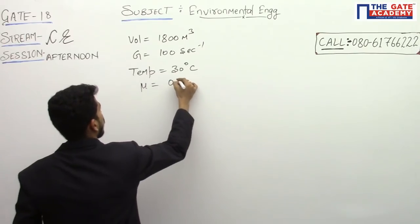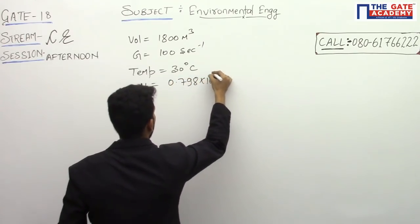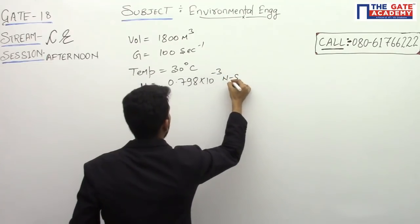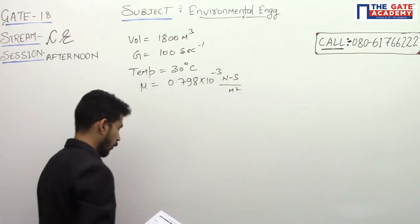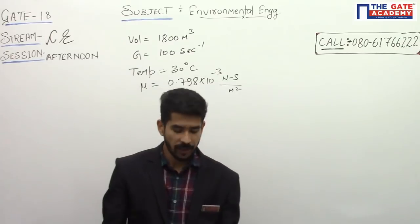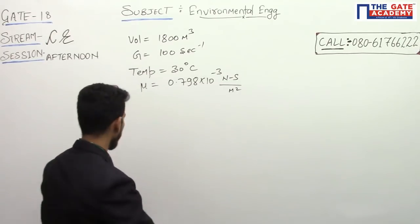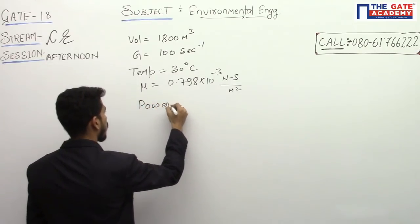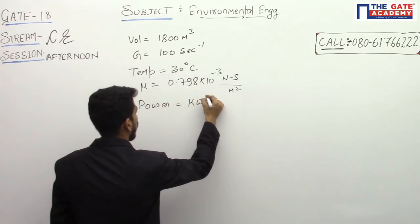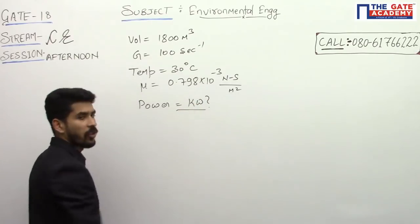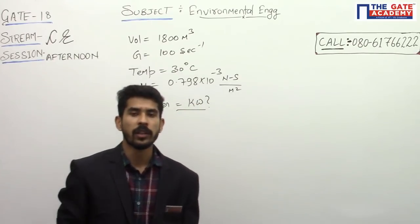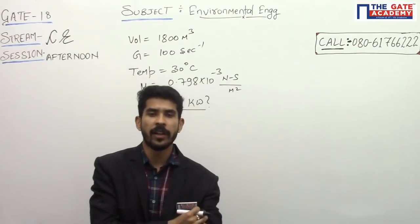And he is asking the theoretical power required in kilowatts. So he is asking the power requirement, power in kilowatts. How many kilowatts of power is required according to this value of G? It's a direct question, direct application of formula.